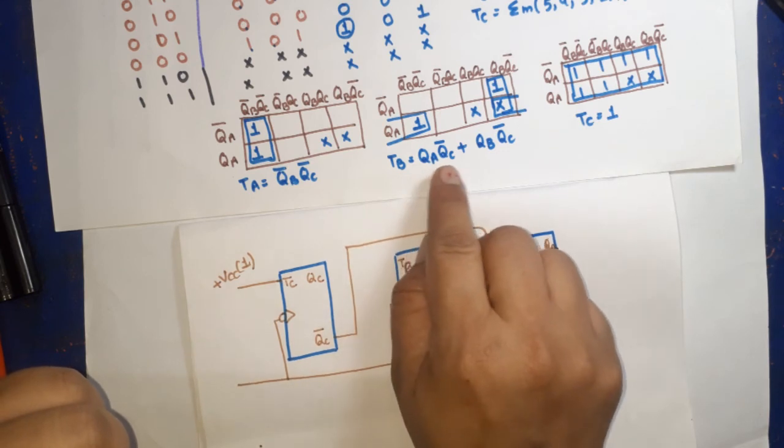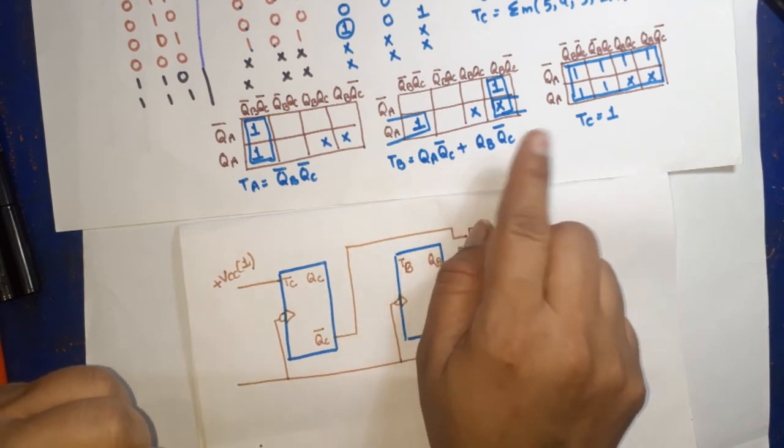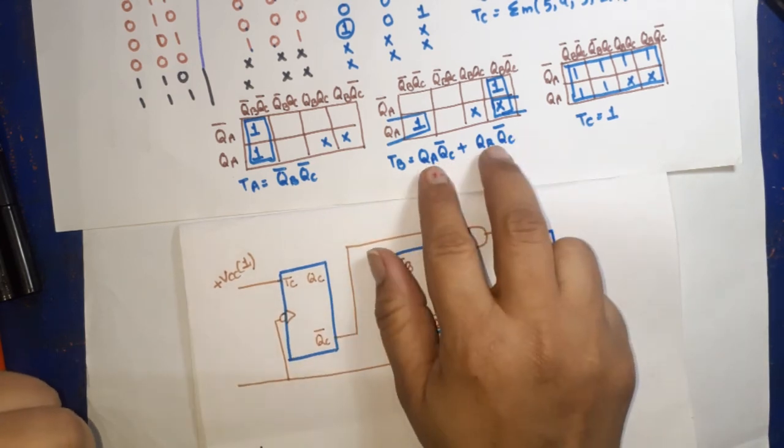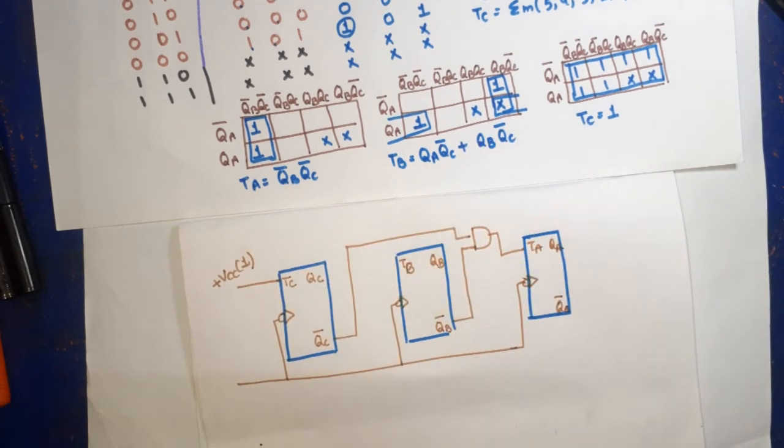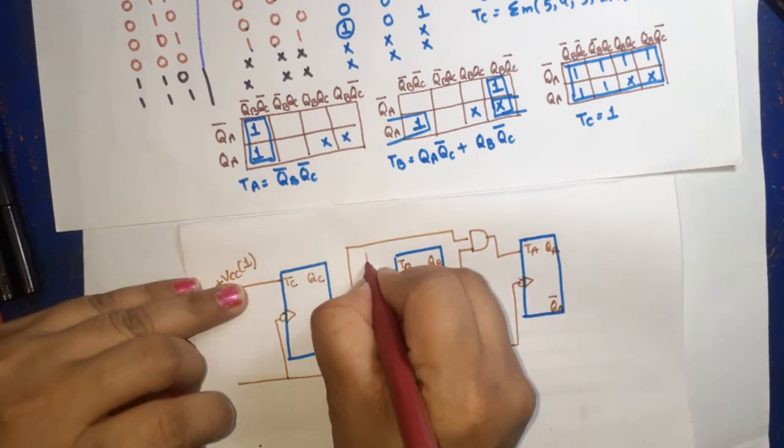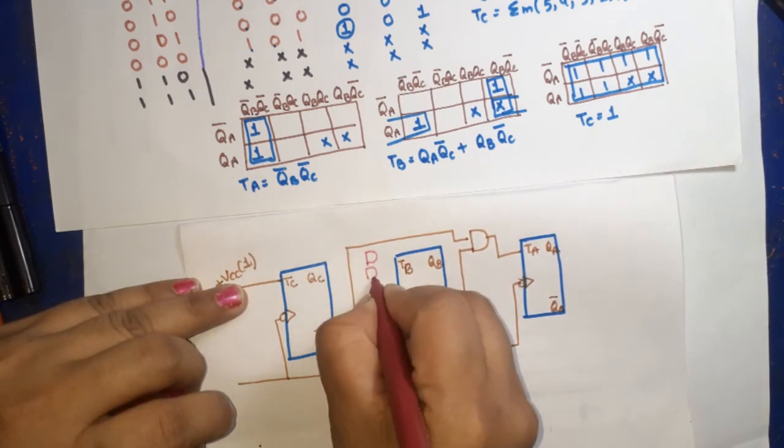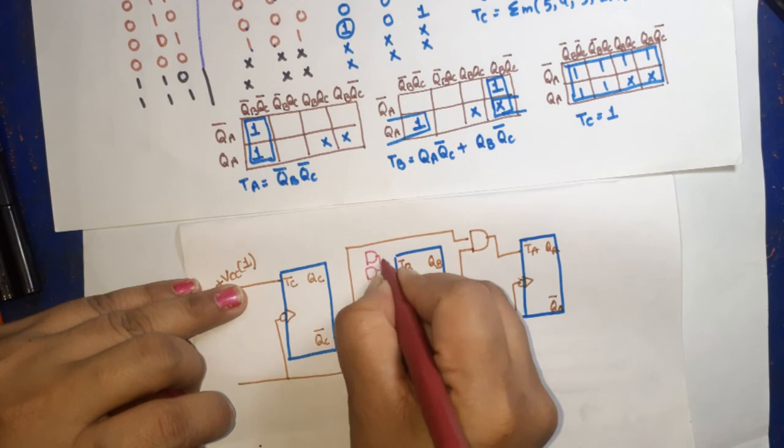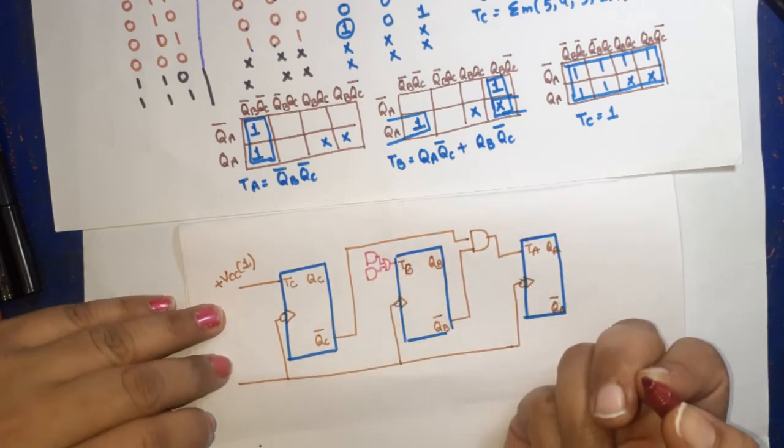TB equals QA QC bar plus QB QC bar. This means we have two AND gates, then one OR gate. So in this circuit we need two AND gates. Here I have added first AND gate, another AND gate. Output of both AND gates go to one OR gate, and it will connect with TB.